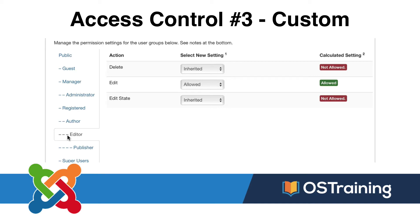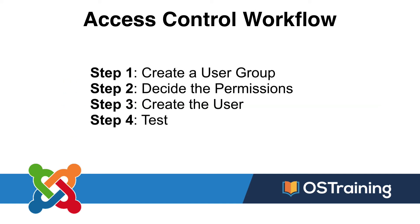Access control also allows you to customize permissions for any given article, menu, or module. For instance, you could disallow the editor group from being able to edit a particular article. The workflow for access control is to set up a user group, decide the permissions for that group, create the users, and test. A simple illustration: in a non-profit organization, you might have a user group called board members who can view articles in the board members category that nobody else can view.